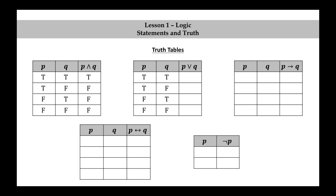The truth assignments are: true-true, true-false, false-true, and false-false. The same goes for the implication and the biconditional. The negation, however, is a unary connective, and therefore it only involves one propositional variable, so there are only two truth assignments: true and false.